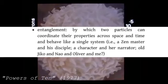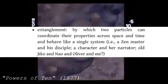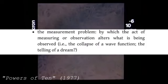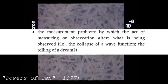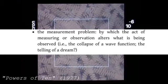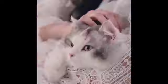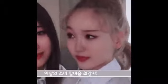Entanglement: by which two particles can coordinate their properties across space and time and behave like a singular system. In other words, a character and her narrator, your body and your shadow. The measurement problem: by which the act of measuring or observation alters what is being observed. In other words, the telling of a dream. If you've been watching my channel for a long time, you'll remember in my complete theory introduction video I brought up the idea of quantum mechanics in the LUNAverse. Was I too overambitious at the time? Perhaps. But was I on the nose about the string theory of possible other timelines and worlds? Yes. And that's exactly what this quantum phenomena relates to.